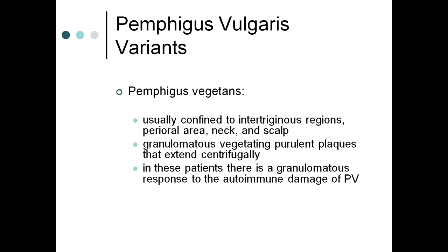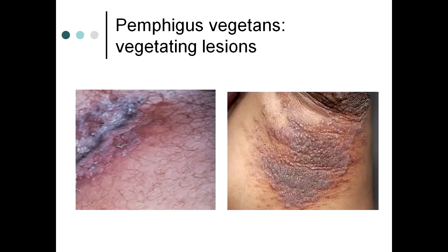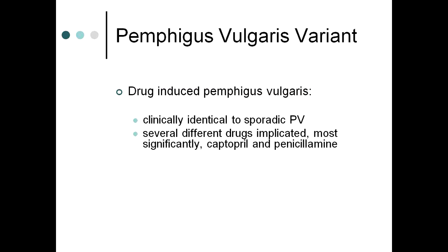Pemphigus vegetans is the most common variant of pemphigus vulgaris, usually confined to intertriginous regions, perioral area, neck, and scalp. It presents with granulomatous vegetating purulent plaques extending centrifugally — a granulomatous response to the autoimmune damage. Images show maceration in the groin and vegetative plaques in the axilla. Drug-induced pemphigus vulgaris is most commonly caused by captopril and penicillamine.